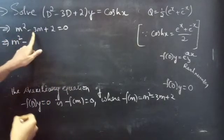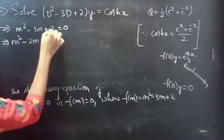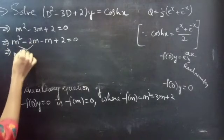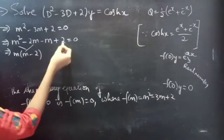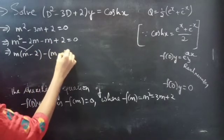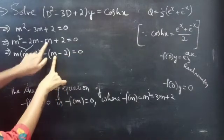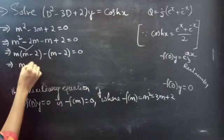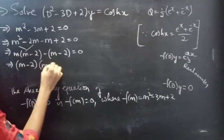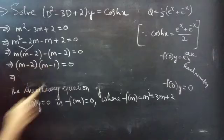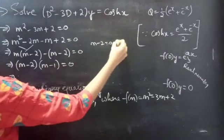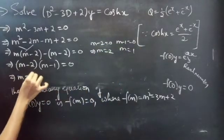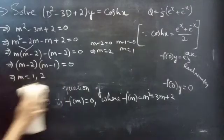We split −3m as −2m − m: m² − 2m − m + 2 = 0. Taking m common from the first two terms gives m(m − 2), and taking −1 common from the next two gives −1(m − 2) = 0. Taking (m − 2) common: (m − 2)(m − 1) = 0. Equating each factor to zero gives m = 2 and m = 1, that is m = 1 and 2, which are real and distinct.